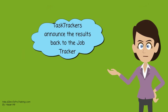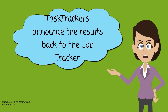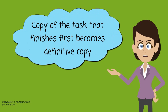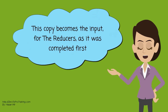As task trackers complete the tasks, they announce the results back to the job tracker. The copy of the task that finishes first becomes the definitive copy. This copy becomes the input for the reducers, as it was completed first.